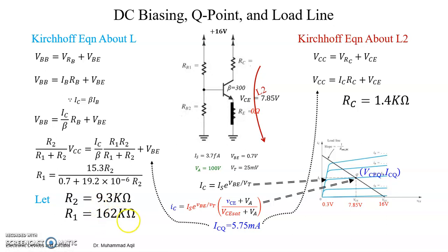It means you have not to round off too much, otherwise your circuit will not work. So when I put 9.3 kilo ohm, I actually got 162.1 or 162.2, something. It's okay to round off that.